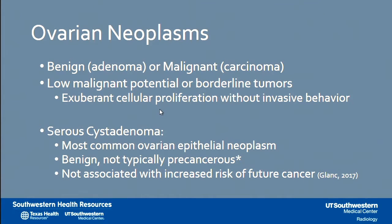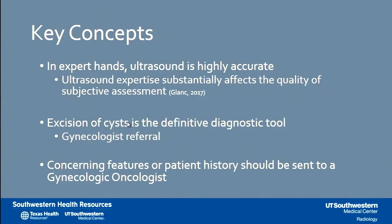Ovarian neoplasms can be benign or malignant, and there are also some in-between — the low malignant potential lesions, which are often handled by an oncologist. Serous cystadenoma is the most common cystic lesion in the ovary; it's benign and not considered precancerous, but it is a neoplasm. When these do degenerate into cancer — very rarely — it is a low-grade cancer. High-grade cancer develops de novo.